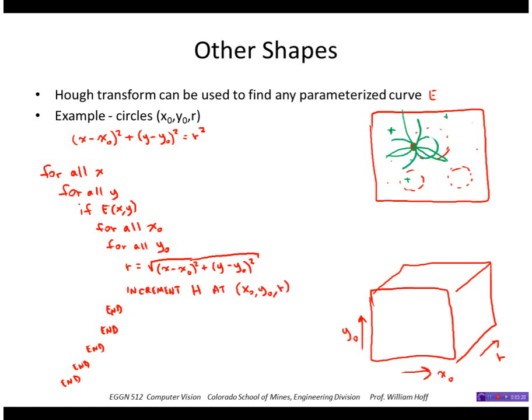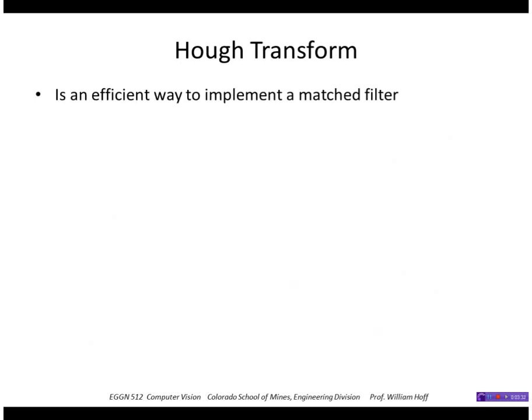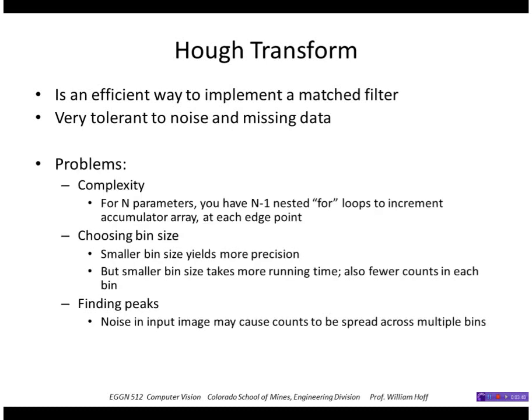So in summary, the Hough transform is an efficient way to implement a matched filter. It's very tolerant to noise and missing data.